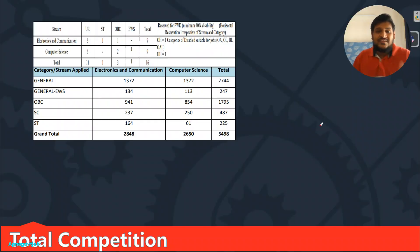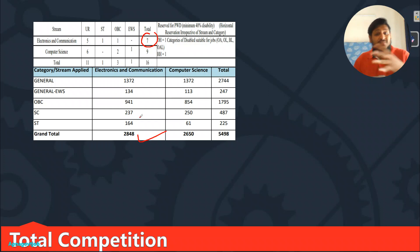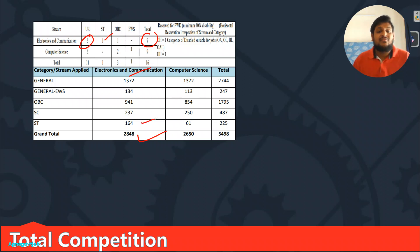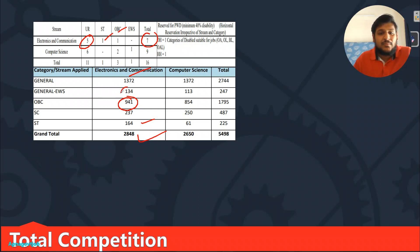Let's start with competition numbers. For ECE, total vacancies are 7, and for those 7 vacancies, approximately 2850 people applied. Category-wise: 5 general vacancies received 1372 applications, 1 ST vacancy received 164 applications, 1 OBC vacancy received 941 applications. For EWS there is no vacancy but still 134 people applied, so they will be considered under general.